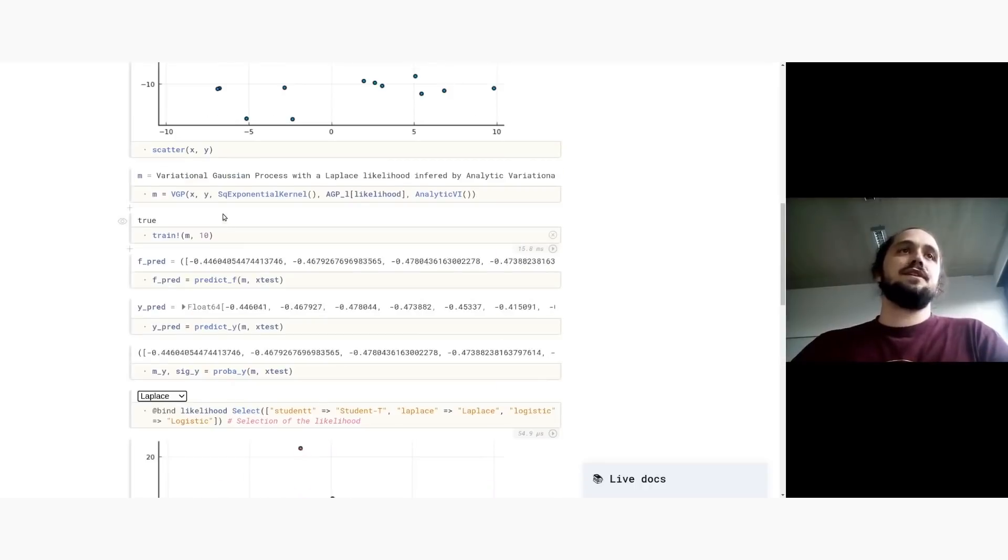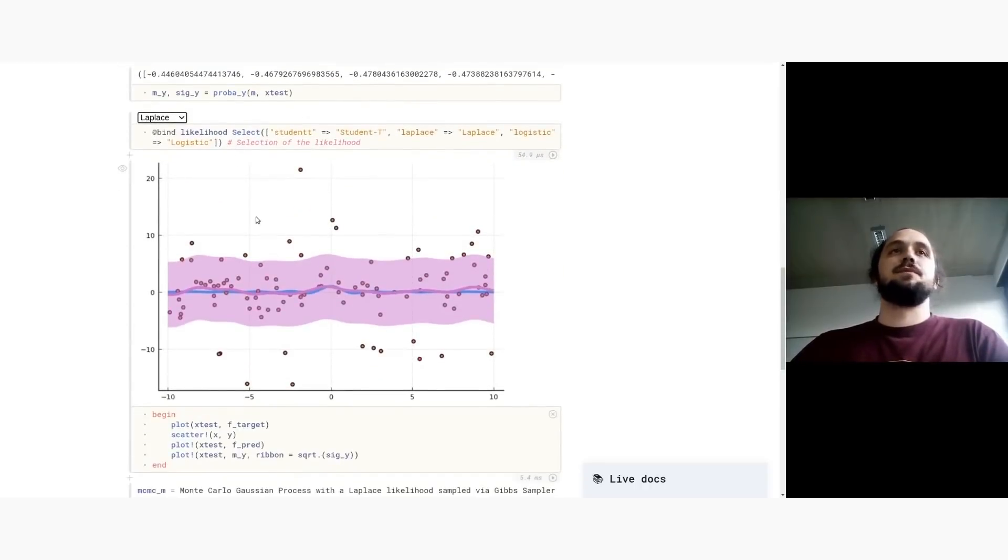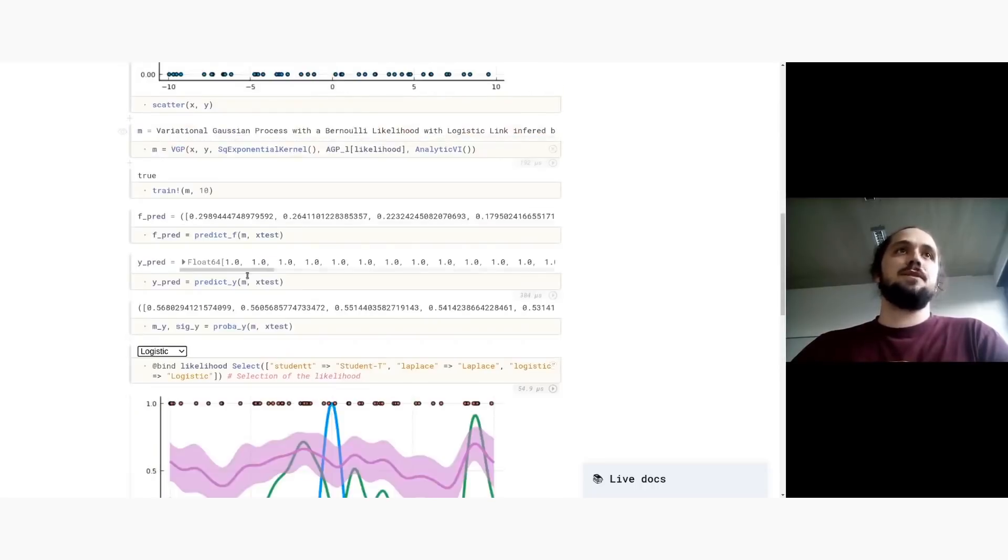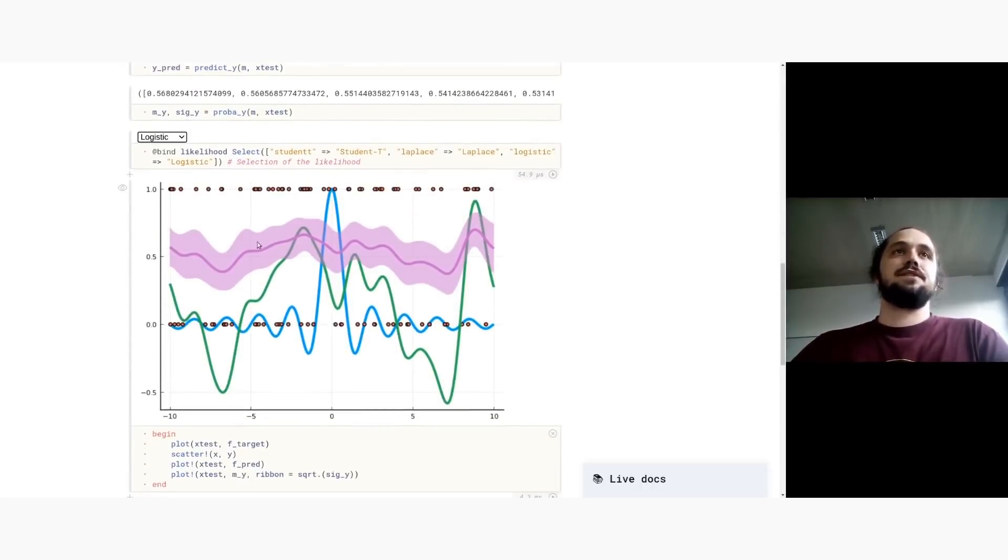So this would be the mean and the covariance of my predictions. So now I can try a different likelihood, for instance, and this would give me something a bit different. And I can use some classification maybe. And again, I get a different result.